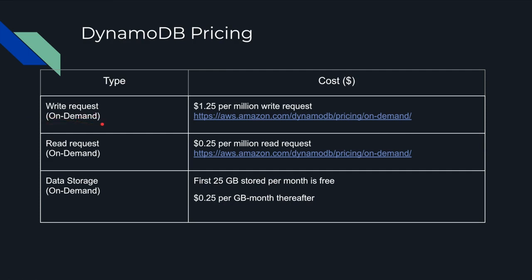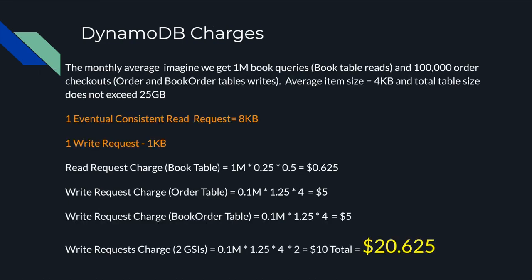In DynamoDB we are charged for three main things: write requests, read requests, and data storage. There's a generous free tier for storage — the first 25 GB per month is free. For our scenario: we get 1 million requests (queries), the average item size is about 4 KB, and the total table size does not exceed 25 GB. With these assumptions we can calculate charges.